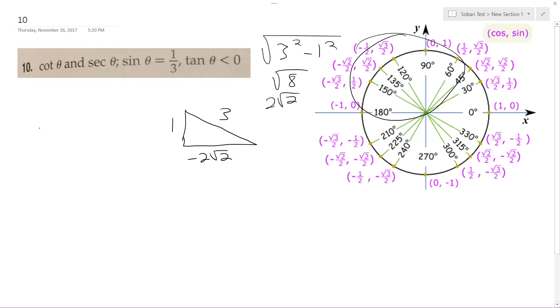So cotangent is adjacent over opposite, which is going to be negative 2 root 2 over 1, or just negative 2 root 2.